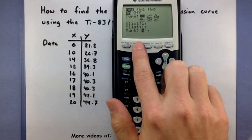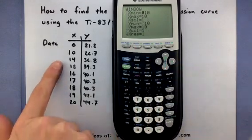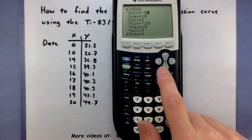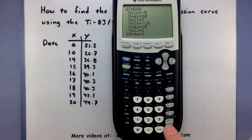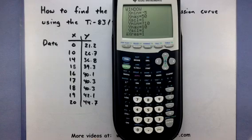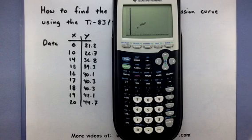Now let's go to window. You can see my X data goes anywhere between 0 and 20. So I'm going to enter in something like maybe between negative 5 and let's say 50 just to get a good range of X values. For the Y values, this says between 21 and 44. So let's go between 0 and 100. Now that you've set your window, we can take a look at the graph of the data.